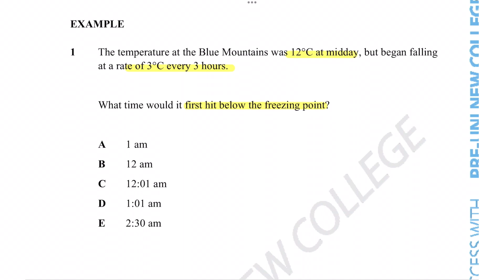We're essentially told the rate of the temperature change, and we're told it's three degrees per three hours. Because rates are very similar to ratios, we can make sure that this is simpler to understand.